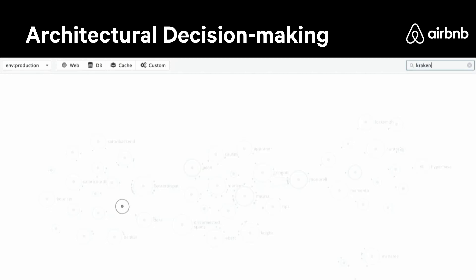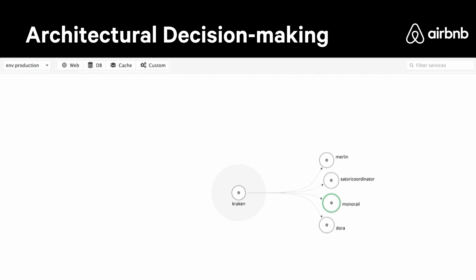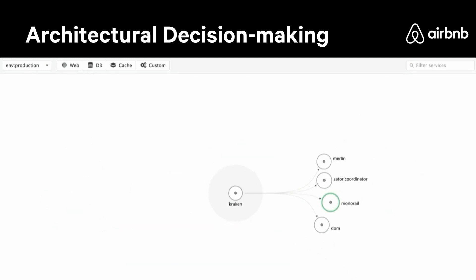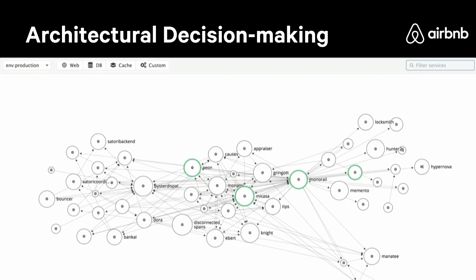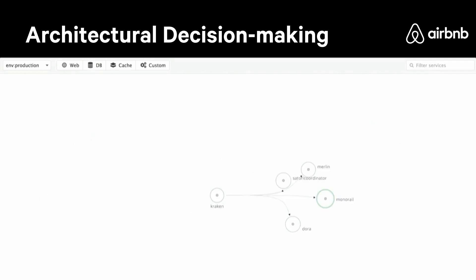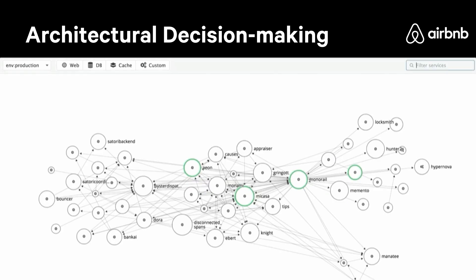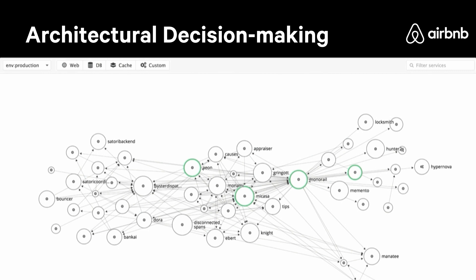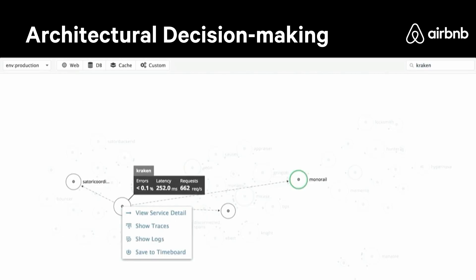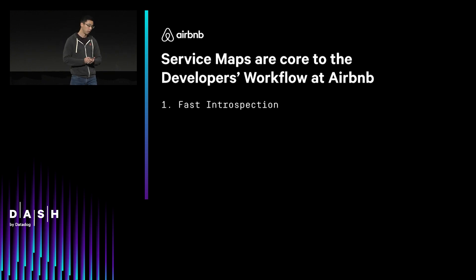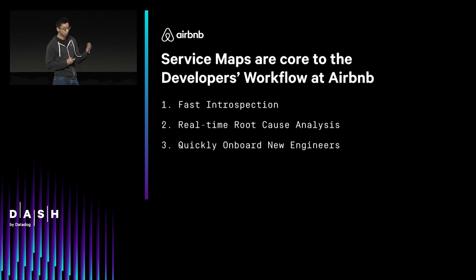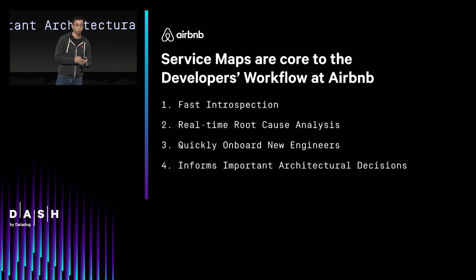Finally, there's often a difference between the architecture that you've designed and the one that you're actually running in production — I'm sure many of us have learned that the hard way. When Datadog showed us their service maps, we discovered many unexpected dependencies that we hadn't quite designed into our system. We were really excited to find that out proactively rather than in the midst of an incident. Service maps provide the first step in helping us understand what our architecture actually looks like, which in turn helps us make better long-term architectural decisions.